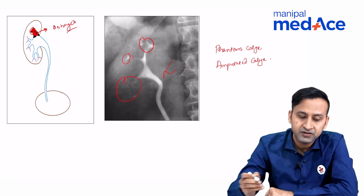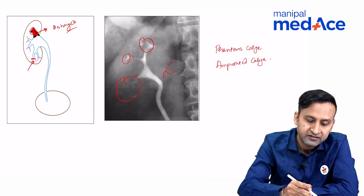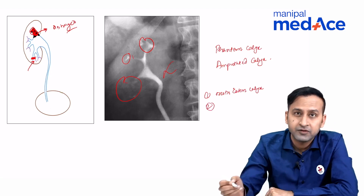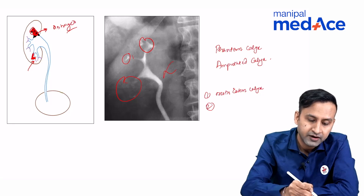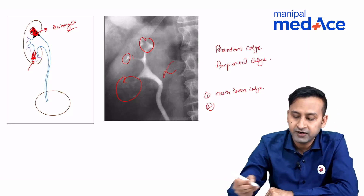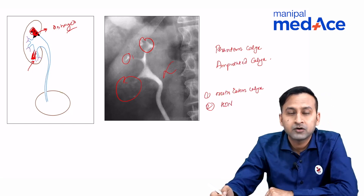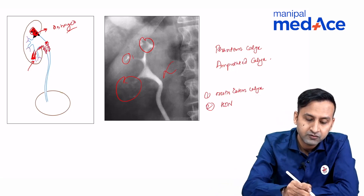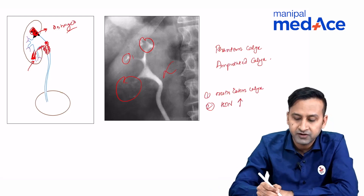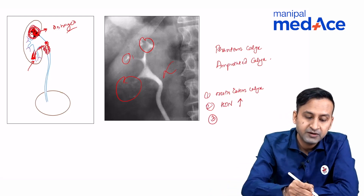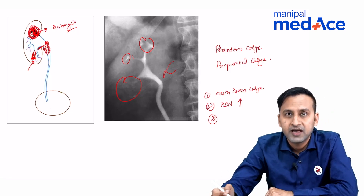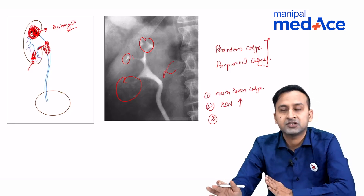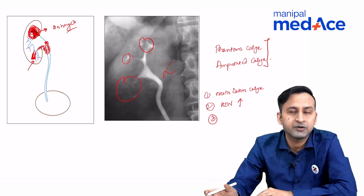Let's quickly revise. First, bacteria lodge in the medullary pyramids and extend into the calices — producing moth-eaten calyx. Then they extend into the infundibulum, causing fibrosis and hydronephrosis. The disease extends to the renal pelvis, which also becomes fibrotic and narrow, further increasing hydronephrosis. Sometimes one calyx is completely destroyed and not visible on IVP — the phantom calyx or amputated calyx. These are the renal calyceal changes in tuberculosis.